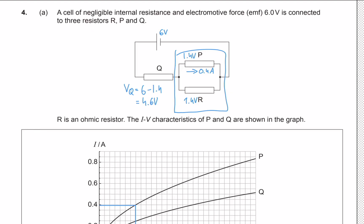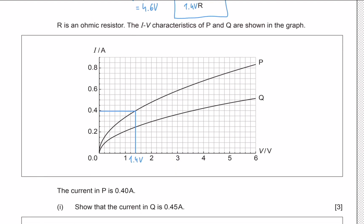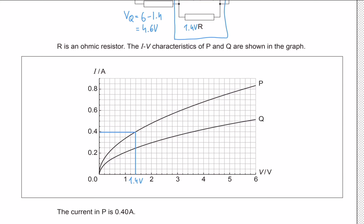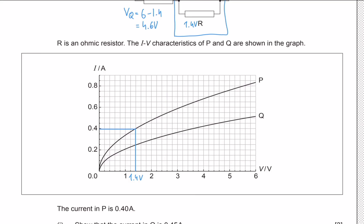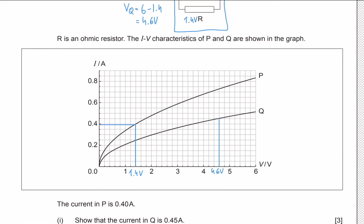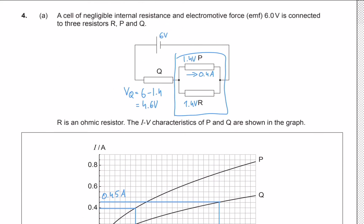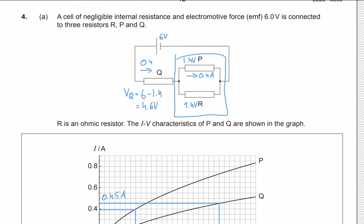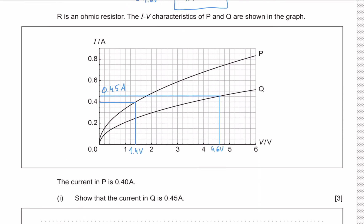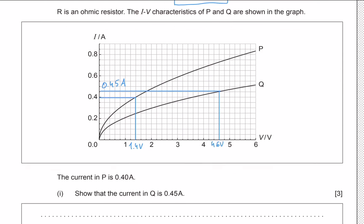Now we know the potential difference across each component. We check the graph for Q at 4.6 volts. The voltage axis goes up in steps of 0.2, so at 4.6 volts we draw a line across and read off that the current through Q is 0.45 amps.